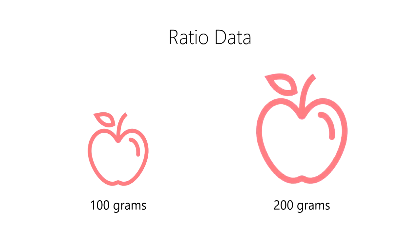Unlike an interval scale, it makes perfect sense to say that a 100 gram apple is half the mass of a 200 gram apple. This is because zero grams on this scale represents a natural minimum quantity, that is, no mass at all.